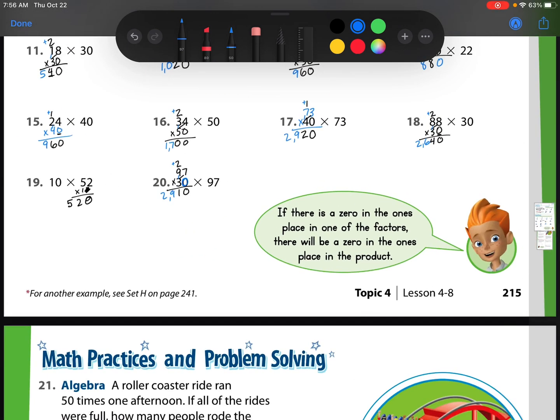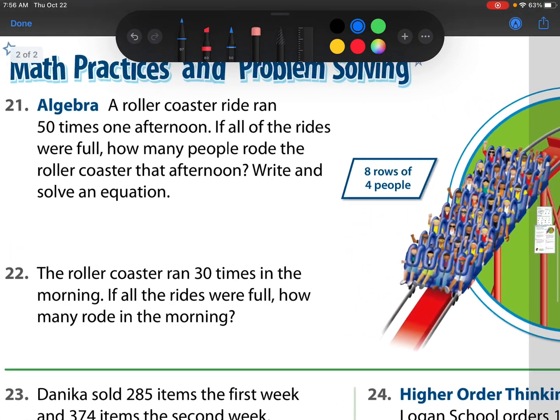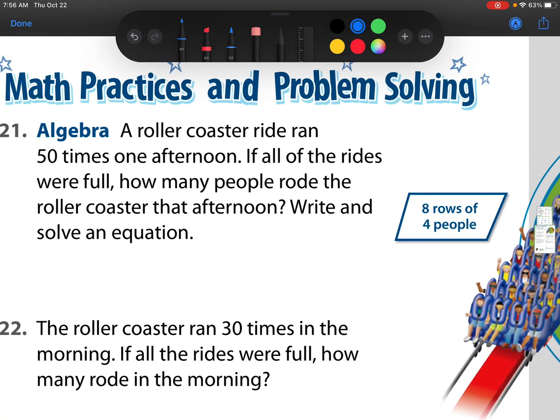So we have our process down. So now let's go to our solving the math word problems. So I have this issue right here. It says a roller coaster ride ran 50 times one afternoon. If all the rides were full, how many people rode the roller coaster that afternoon? Well, I don't see any other numbers there. So should I just give up? No. It means there's probably something else hidden somewhere on the page. And as I look, I see it's related to this text feature. It says there's 8 rows of 4 people.